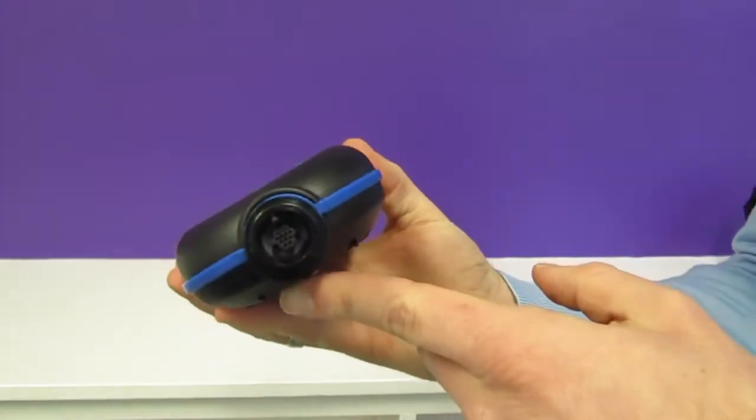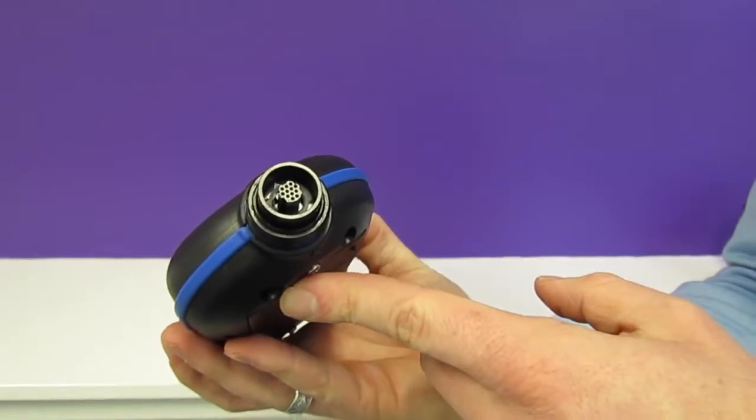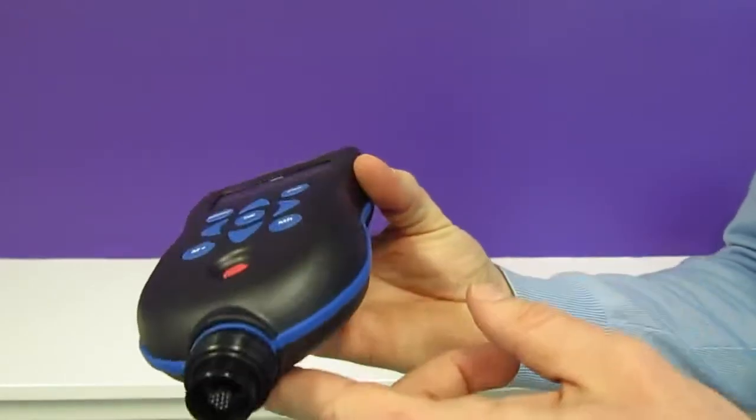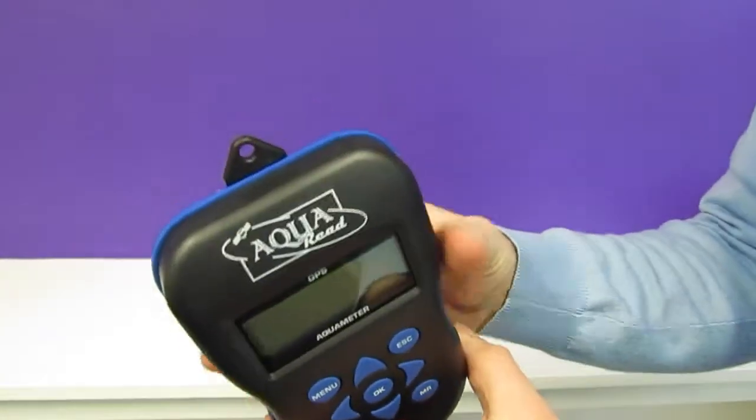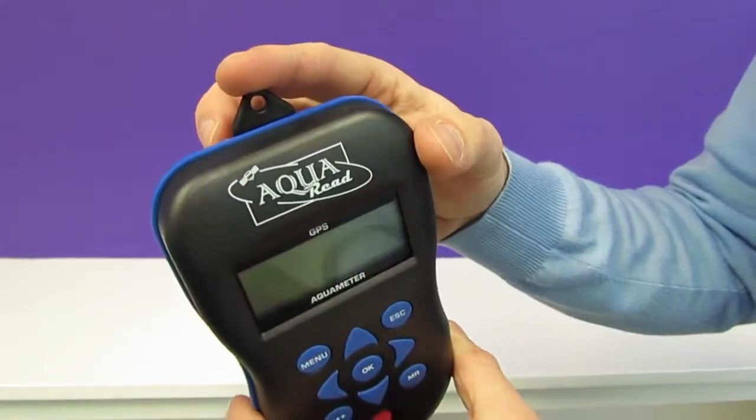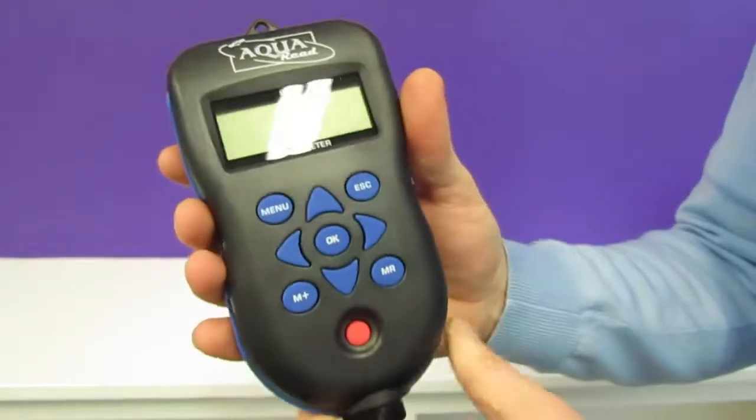The meter also features one of our metal connectors which is very strong and rugged for use in the field. And it also has a lanyard clip to allow you to fasten the meter around your neck so you don't drop it into the river.